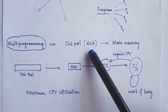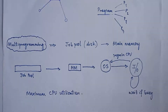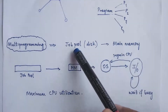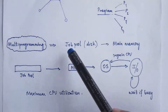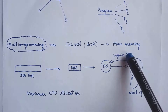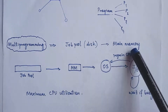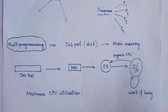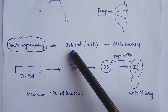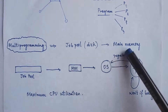Based on the disk scheduling algorithm we use, a few processes from the job pool are brought into main memory. Only the processes which are present in the main memory can get the CPU — that is, they can get executed. So the first step is to bring the processes from the job pool into the main memory.